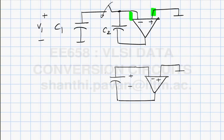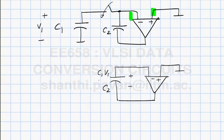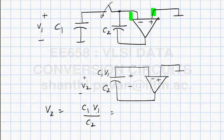The charge is C1·V1, and the capacitance value is C2, so the voltage across this capacitor V2 is simply the charge divided by the capacitance: C1/C2 times V1. The output voltage of the amplifier is -C1·V1/C2.